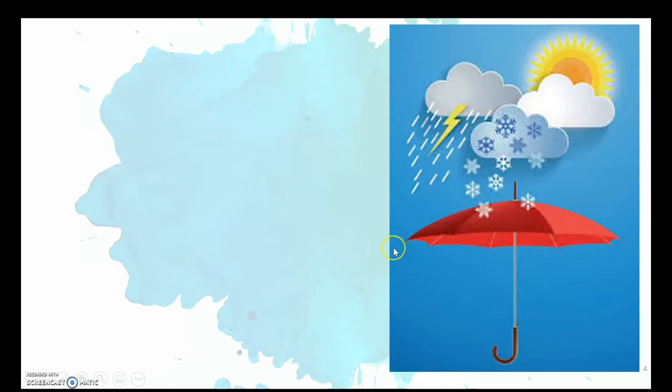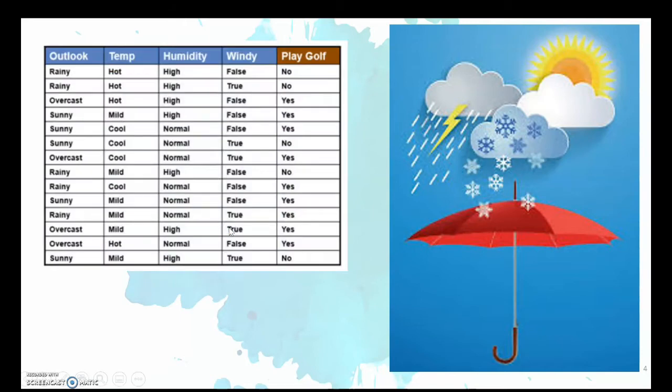Let us use an example to decide whether a person will play golf or not depending on the weather. So let's say we have information about outlook and humidity and wind, and these are the data or the records based on a person's decision to play golf or not.